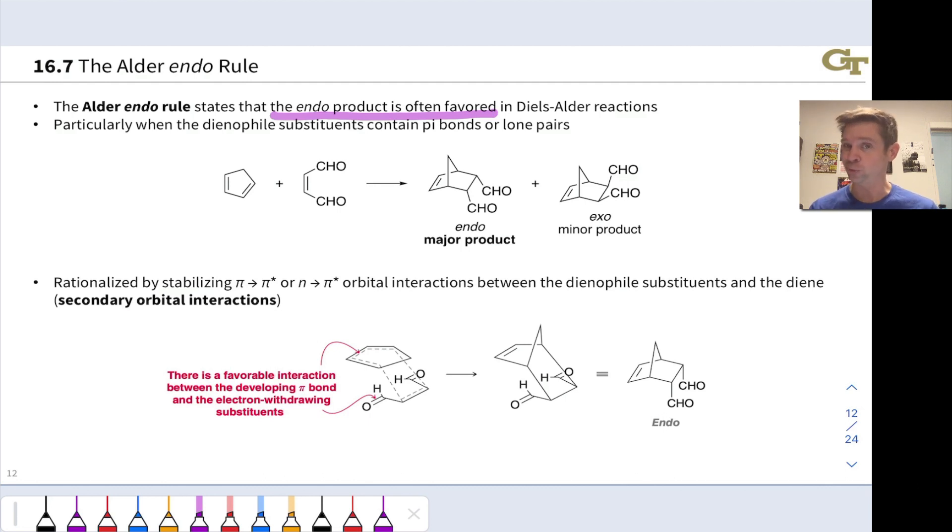It's particularly true and particularly reliable when the substituents on the dienophile contain pi bonds or lone pairs, and that's absolutely the case here. Keep in mind that the CHO substituent, that's an aldehyde, contains a carbonyl group, a CO double bond. The CO pi bond fits right into this category. The dienophile does indeed contain a pi bond. And so in this case, the endo product is absolutely the major product.